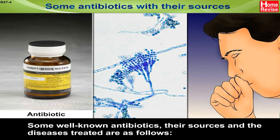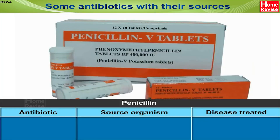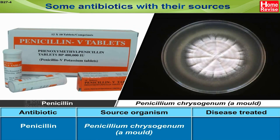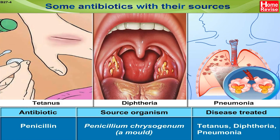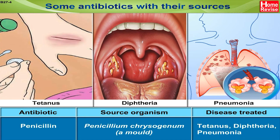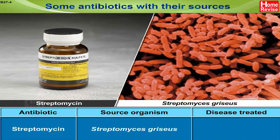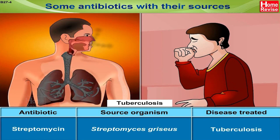Some well-known antibiotics, their sources, and the diseases treated are as follows. The source of antibiotic Penicillin is Penicillium chrysogenum, a mold. The diseases treated include Tetanus, Diphtheria, and Pneumonia. The source of Streptomycin is Streptomyces griseus and it is used to treat tuberculosis.